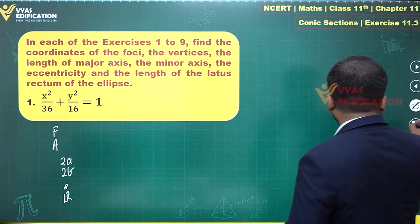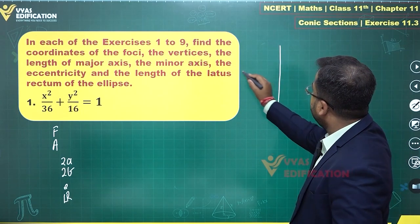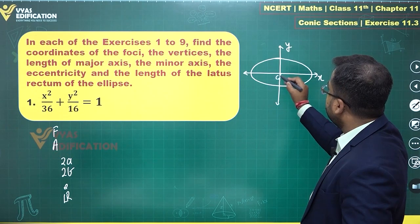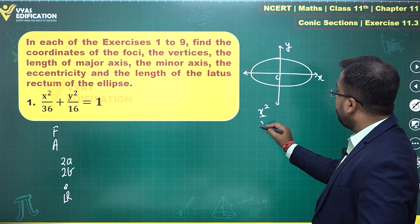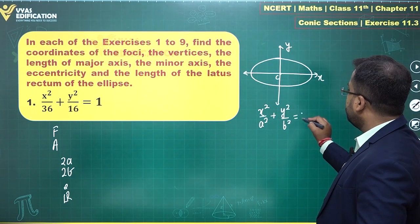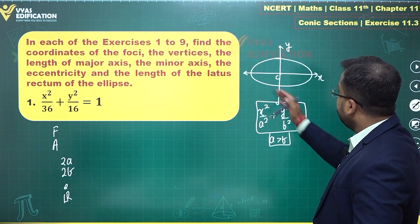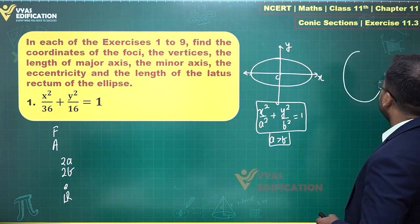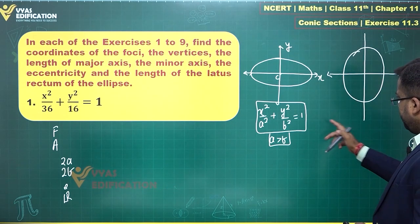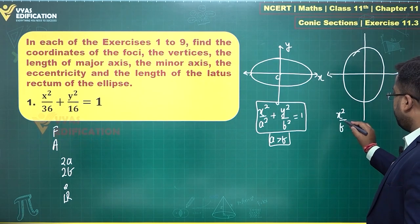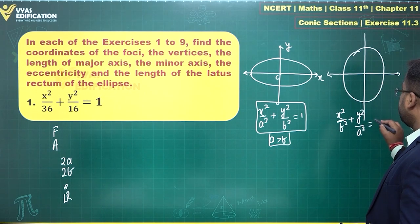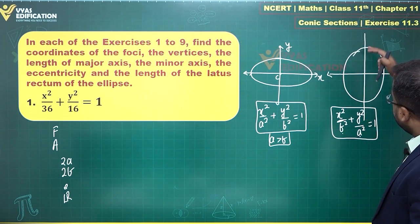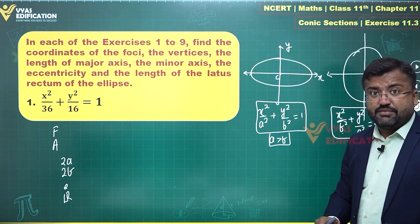We have two standard forms of the ellipse. If the major axis lies along the x-axis, the equation is x² / a² + y² / b² = 1, where a is greater than b — this gives a horizontal ellipse. The other form has equation x² / b² + y² / a² = 1, where the denominator of y² is bigger, giving a vertical ellipse.